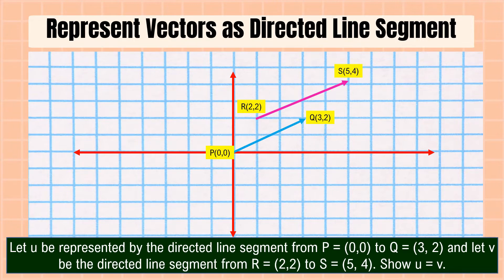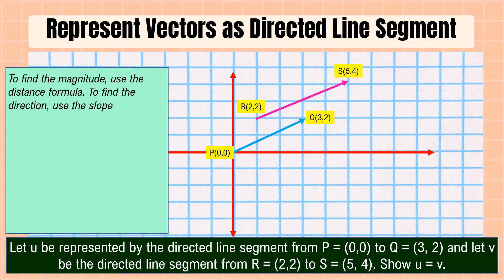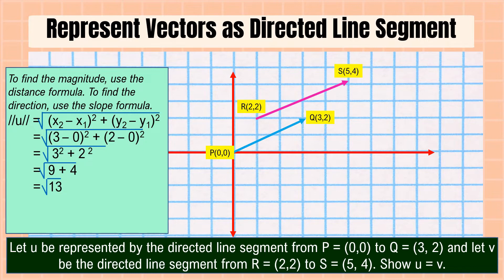First, we're going to find the magnitude and direction of directed line segment u. To find the magnitude, use the distance formula; to find the direction, use the slope formula. The formula is the square root of the quantity (x₂ − x₁)² plus the quantity (y₂ − y₁)². Substituting the points of directed line segment u, the magnitude is equal to the square root of 13.